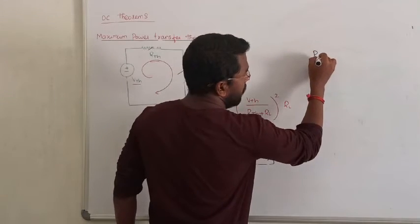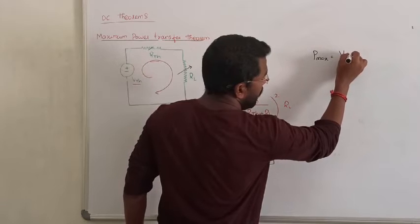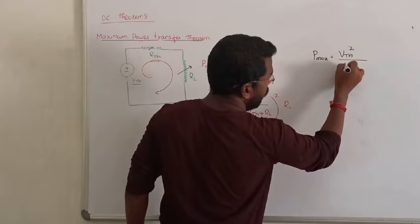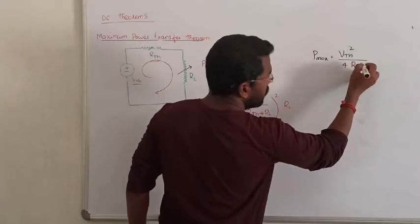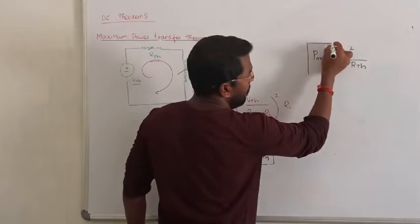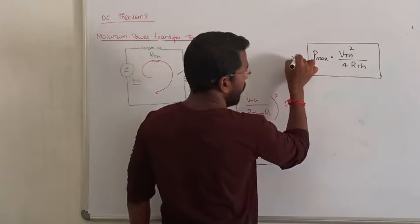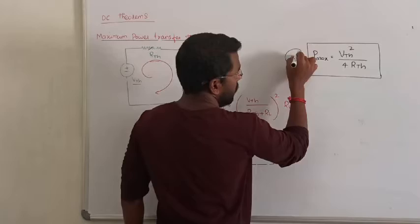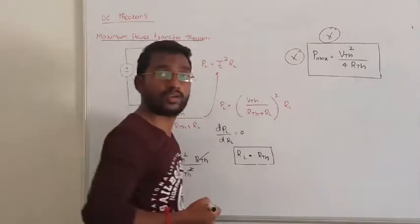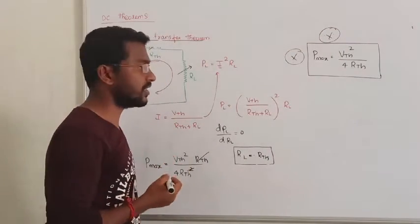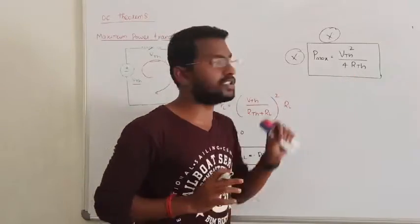When RL equals RTH, the maximum power transferred to the load becomes: P_max = Vth² / (4 × Rth). This is the general formula to obtain the maximum power across the load. There are numerous theoretical exam questions based on this formula.